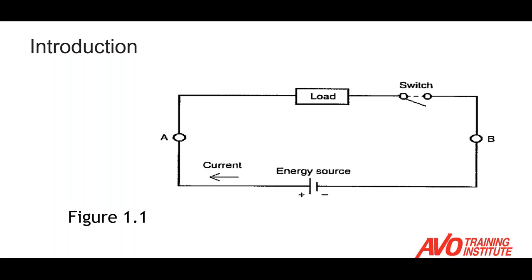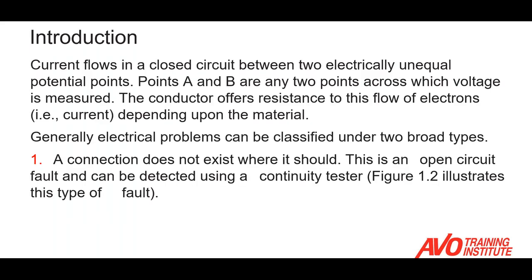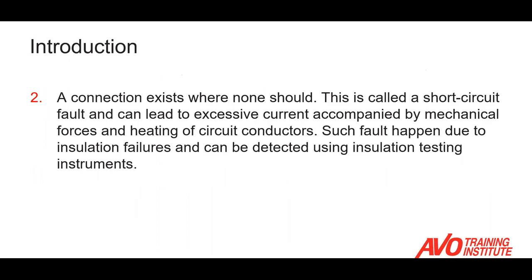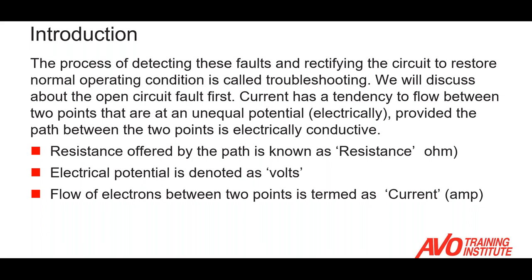We're going to talk about a series circuit. Of course, you have to have a source, path, and a load. We need to be able to recognize how the components are connected in a circuit — that would help us troubleshoot. There are two kinds of problems that generally exist: a short circuit and an open circuit. An open circuit is where there's no path where there should be one, and a short circuit is where there's a path where there should not be one. The process of detecting those faults and rectifying the circuit to restore it to normal operation is what we call troubleshooting.